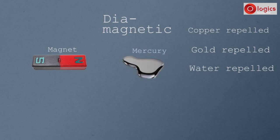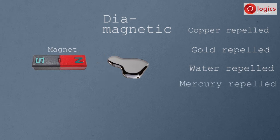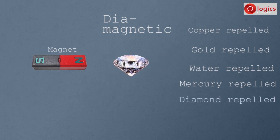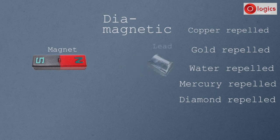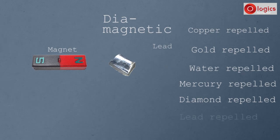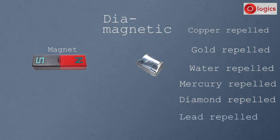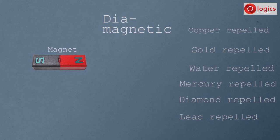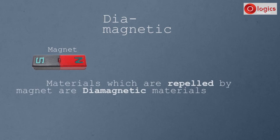This is mercury. Mercury is also repelled by the magnet. This is the diamond. Diamond is also repelled by the magnet. This is the piece of lead. Lead is also repelled by the magnet. These materials are repelled by the magnet, so they are known as diamagnetic materials. Materials which are repelled by the magnet are diamagnetic materials.